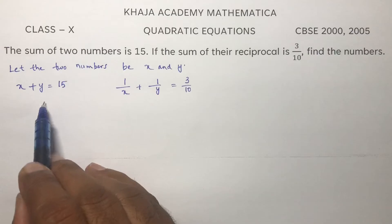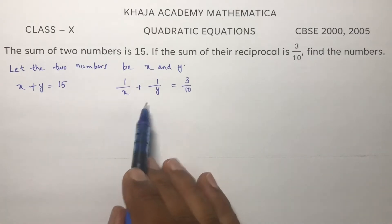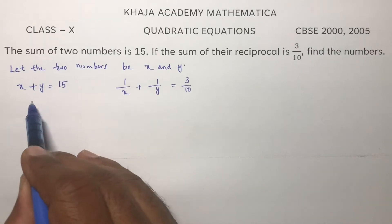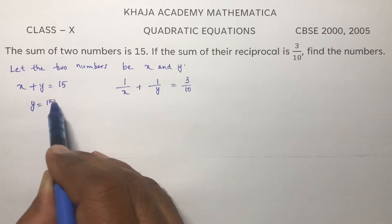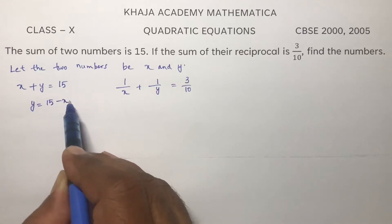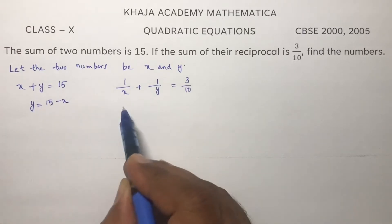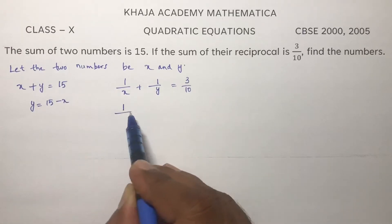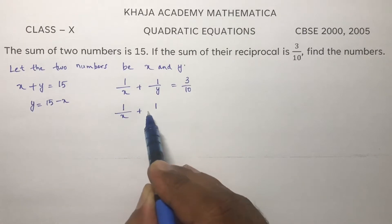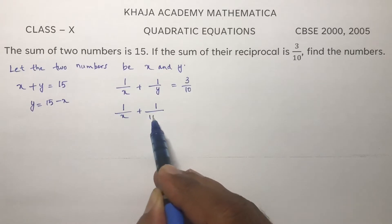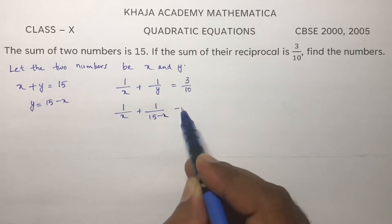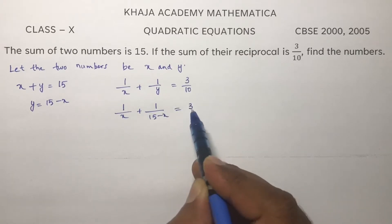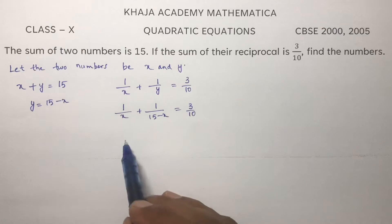From here, either the value of x or y you take and substitute in the other equation. Here I will take y equals 15 minus x. This value I will substitute here: 1 by x plus 1 by 15 minus x equals 3 by 10.